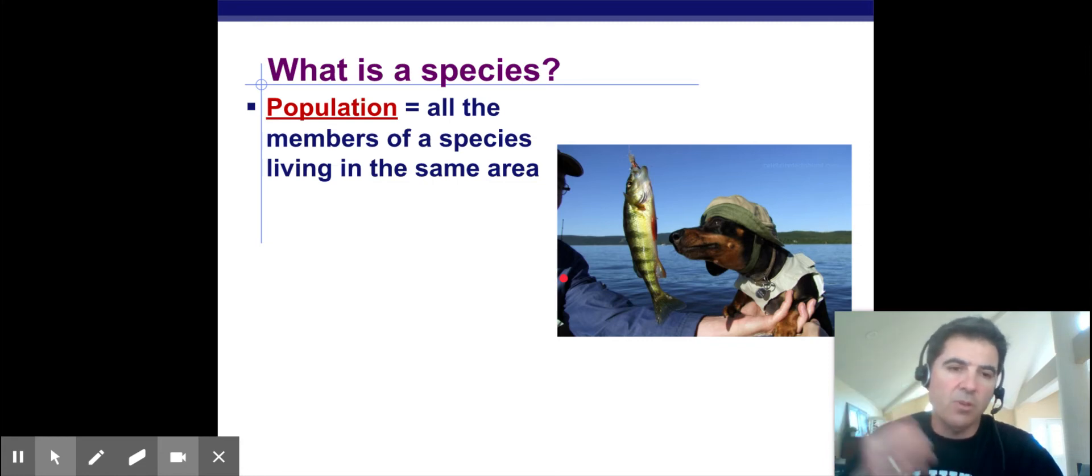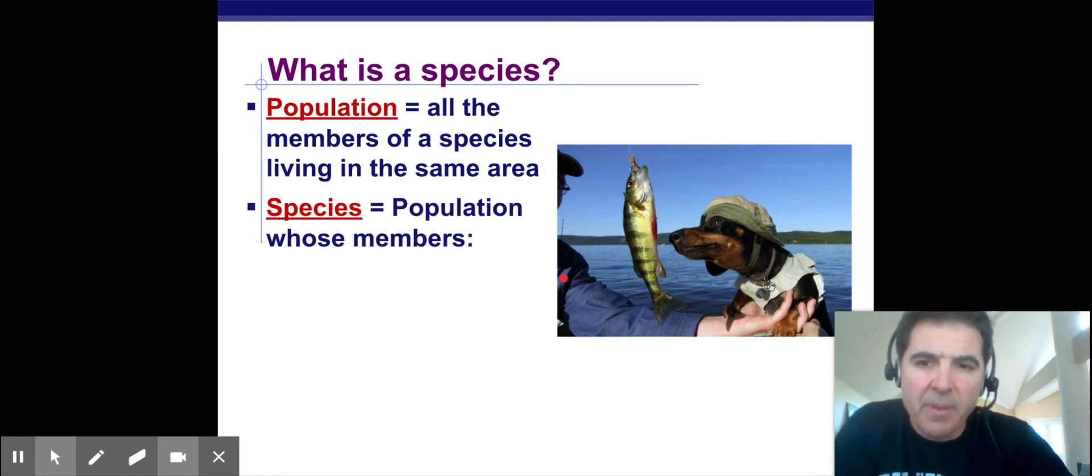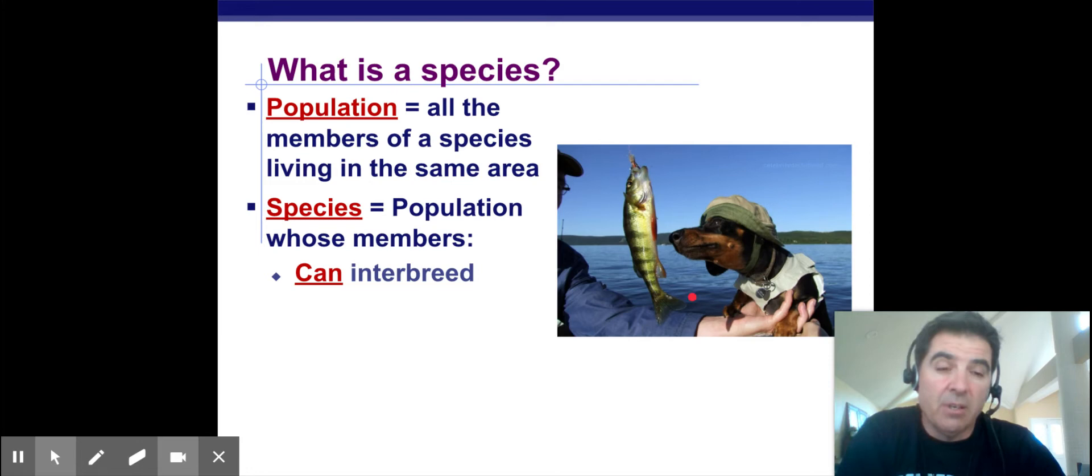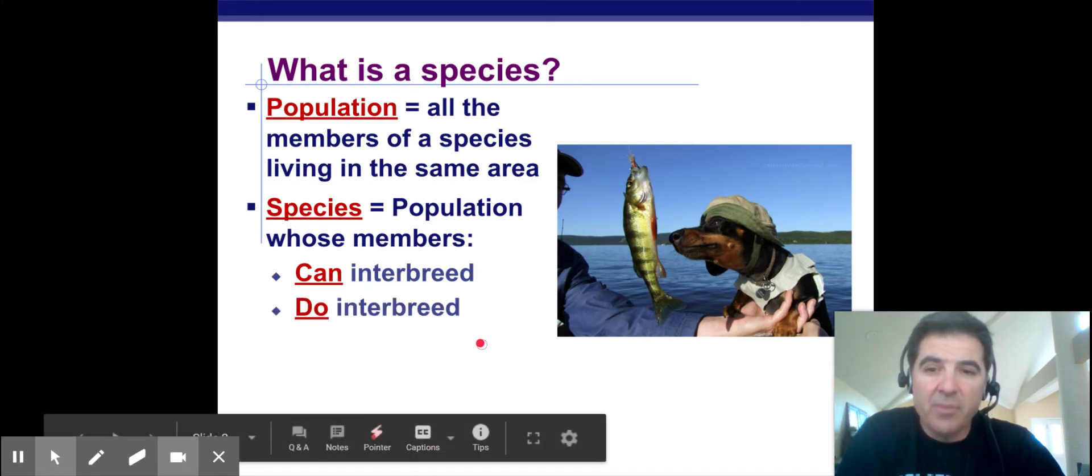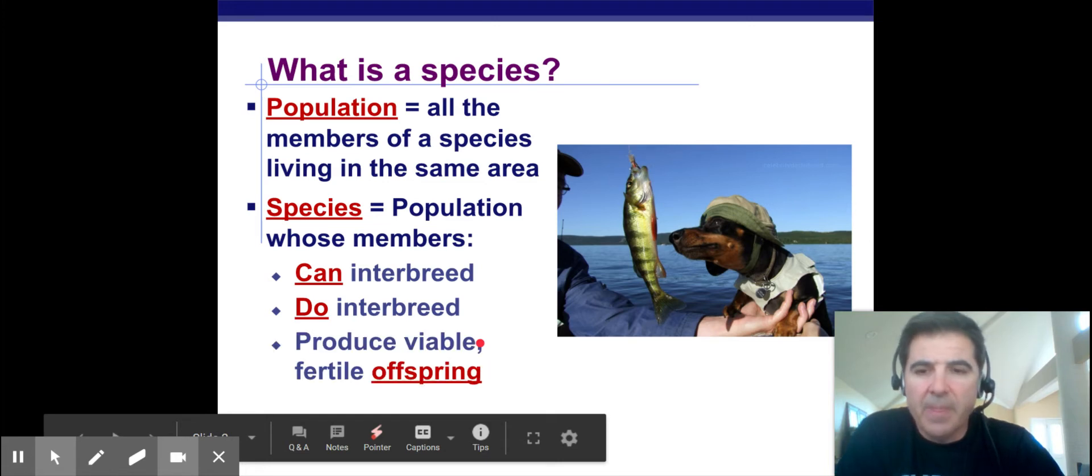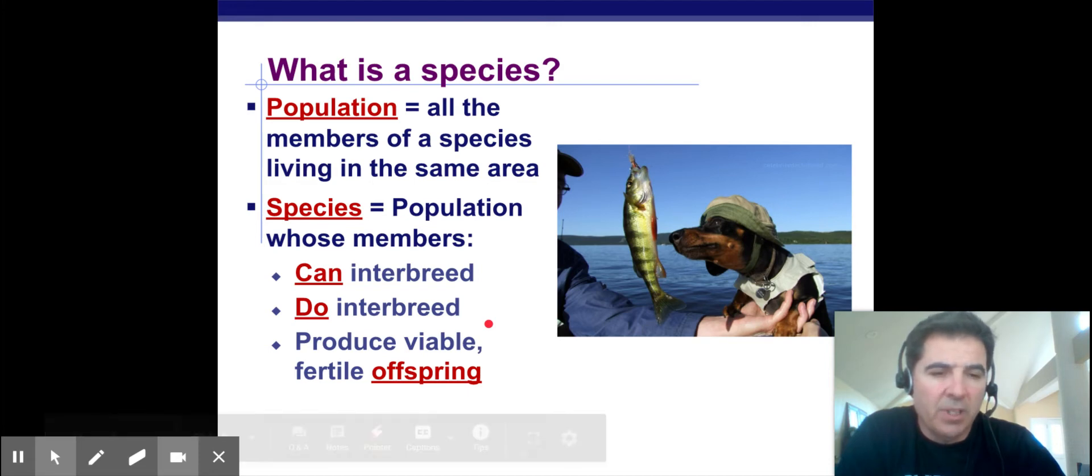So what the heck is a species? A species is a population whose members can interbreed. Obviously the dog and the fish cannot interbreed. They do interbreed and they produce fertile, viable offspring as a result.